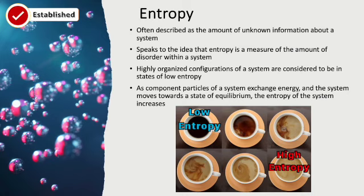After the mixture of milk and coffee has become homogenous, the system has achieved equilibrium. It has evolved to a more disordered state. In this disordered state, there's less information about the configuration of the system that can be attained by observing it — the entropy of the system has increased. The system has evolved from a state of low entropy, a very ordered state where there's a lot of information available about the configuration, to a very disordered high-entropy state. Entropy is a measure of how close a system is to a state of equilibrium; the closer to equilibrium, the higher the entropy of the system.